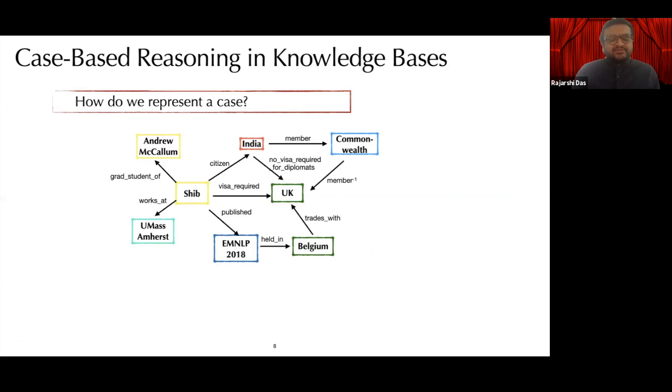How do we represent a case in our knowledge base setting? So, for each fact in the knowledge graph, we collect a random sample of paths which connect the two entities in the fact.